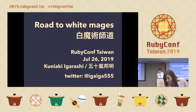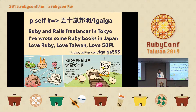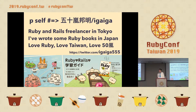Thanks for attending. I'm talking about debugging — the title is 'Road to White Mages.' I'm Kuniaki Igarashi. My Twitter account is IGA555. I'm a Ruby and Rails freelancer in Tokyo, and I've written some Ruby books in Japan. I love Ruby, love Taiwan.